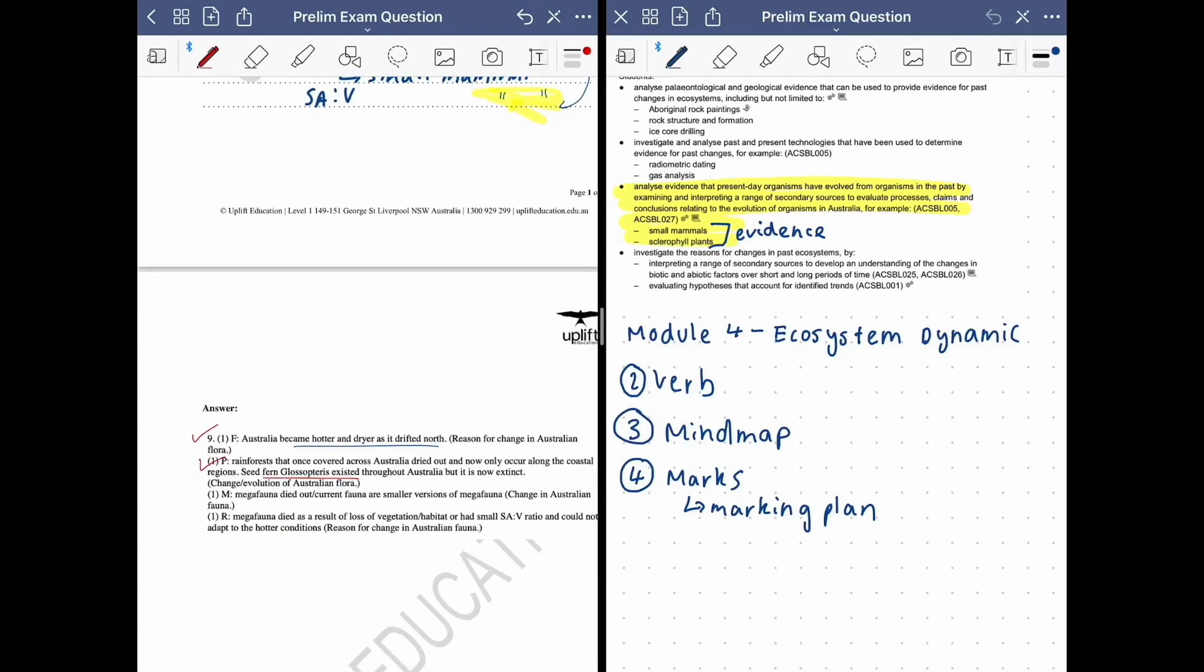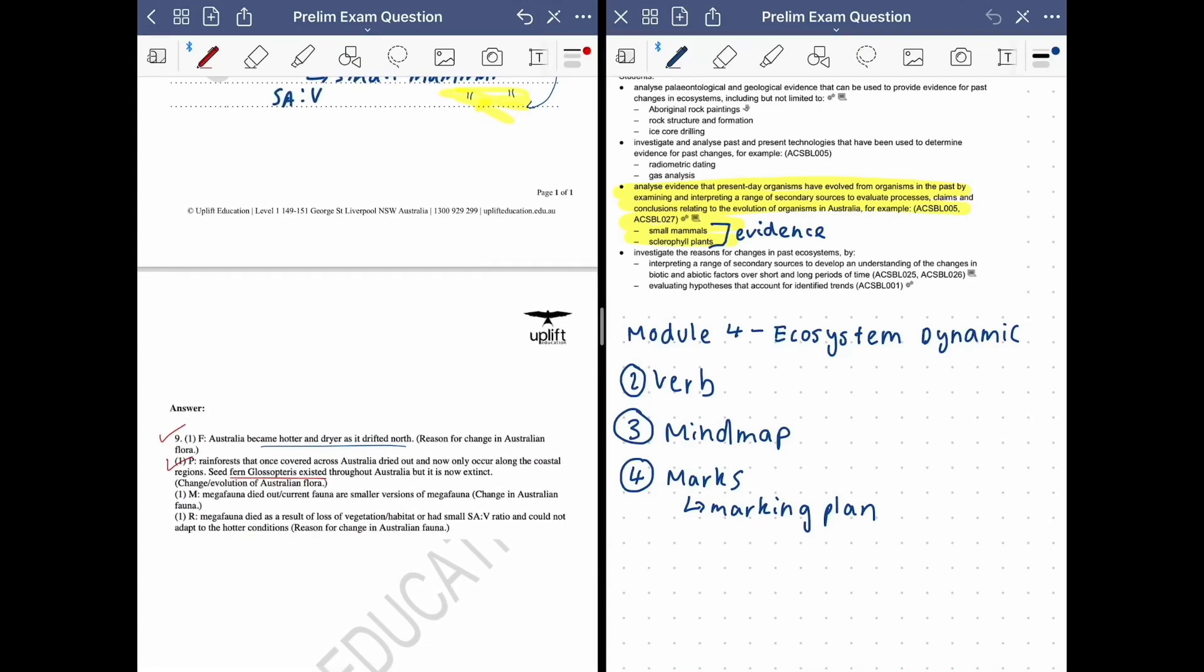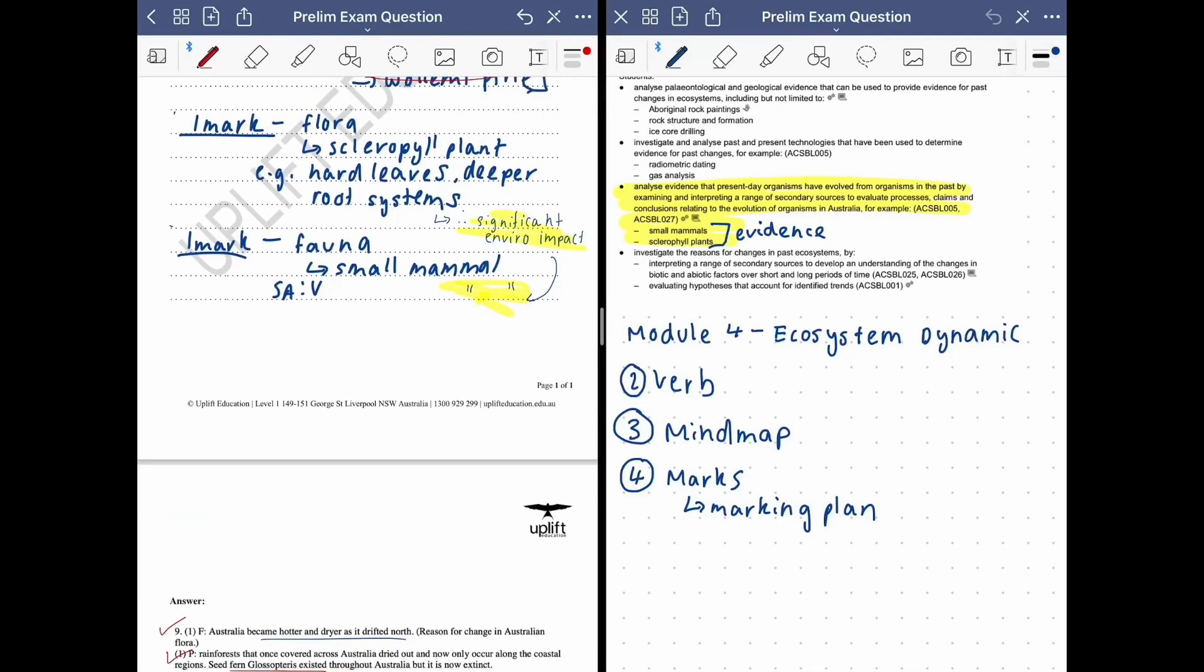Next one, so it's talking about megafauna dried out. So current fauna are smaller versions of the megafauna so in a way we've covered that with talking about our small animals and we've gone more into depth about saying the reason why these small mammals were better adapted so we've got that.